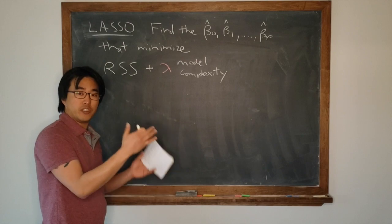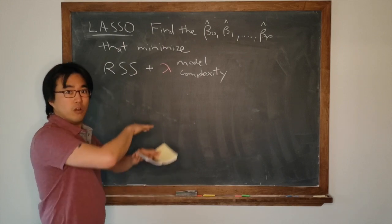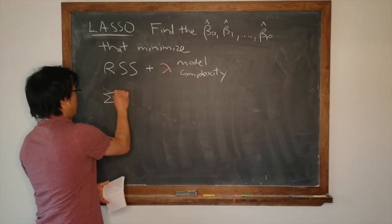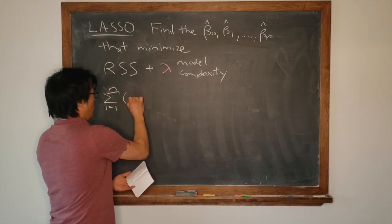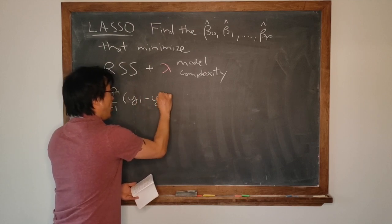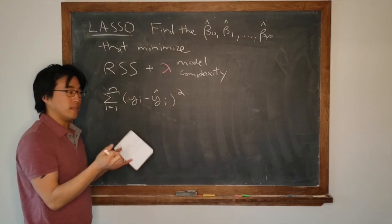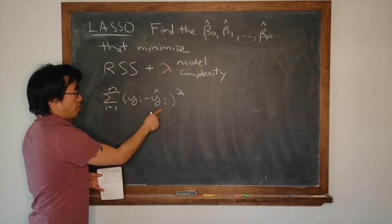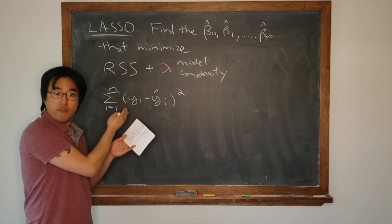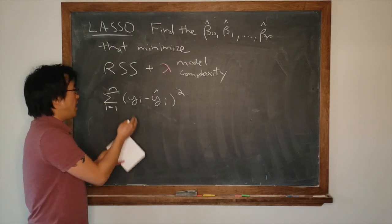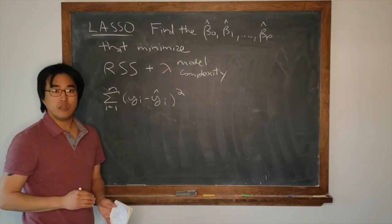This part here is very similar to what we had before. Now we don't have a double summation to sum across all leaves and all observations within each leaf. We just lump them all together. It is sum from i equals one to n of y_i minus y_i hat squared. Again, it's the residual sum of squares. The better the predictions match up with the actual values, the smaller this gets.